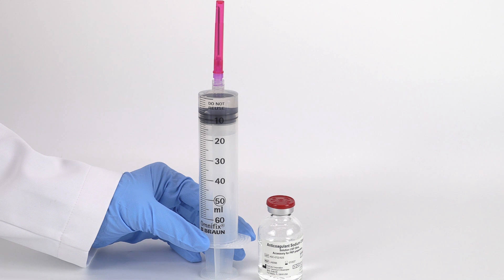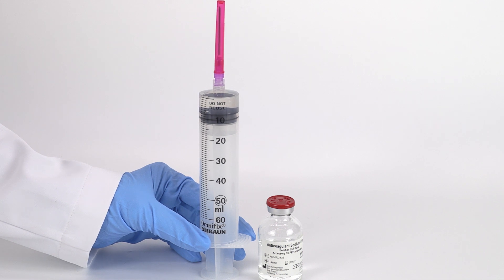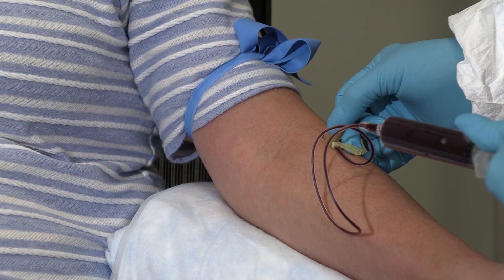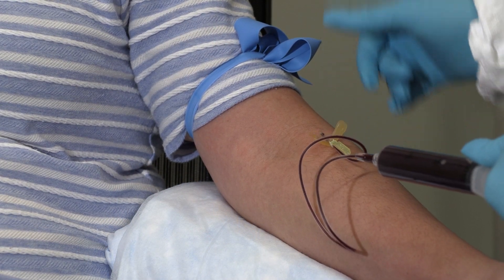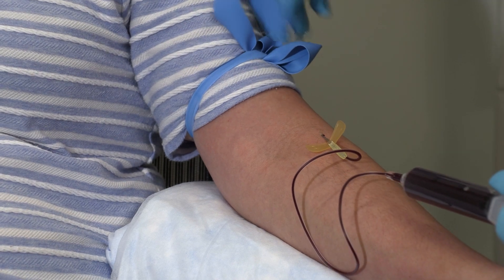Fill a 60 milliliter sterile syringe with 8 milliliters of citrate anticoagulant. Then draw 52 milliliters of blood from the patient, filling the syringe to 60 milliliters.